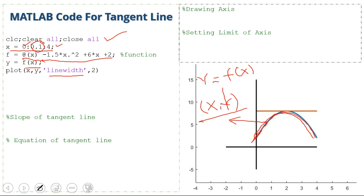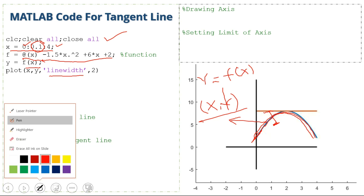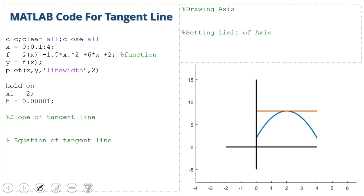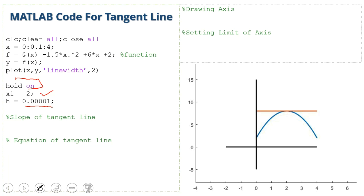Next we use the 'hold on' command to plot multiple graphs in the same figure. This is the point x1 on which we want to plot the tangent line. We also define the increment h; you can use 0.001 — it's up to you.